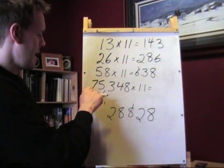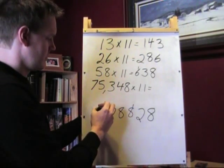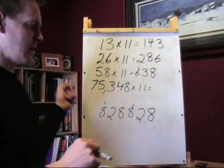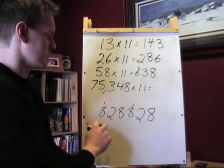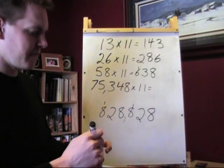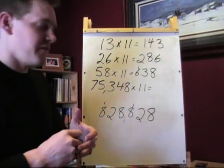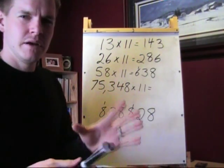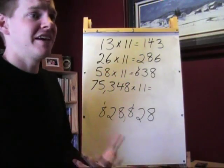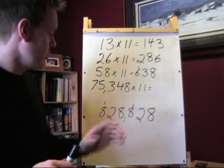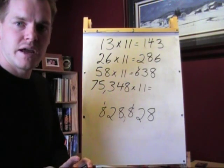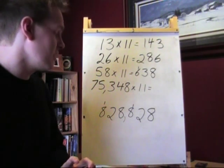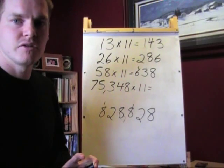I make sure to carry the 1. And then, I write 7. And I have to make sure to add on that 1 that was on top. So, my final answer, then. If I multiply 75,348 times 11, which I'm sure is a very common math problem that you see in your daily life, your result will be 828,828.